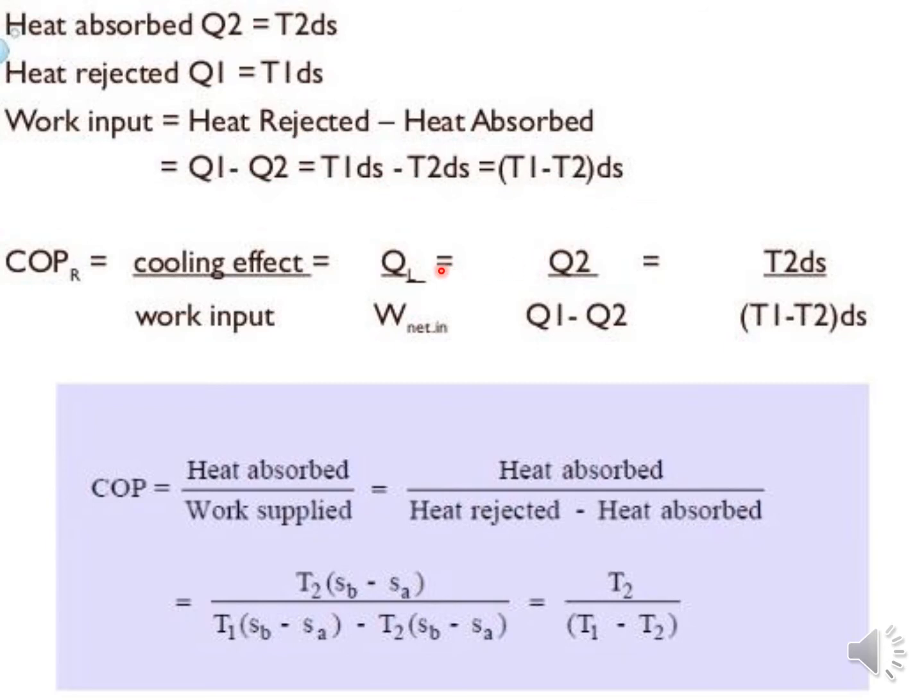Cooling effect is Q2, Q2 is heat absorbed, divided by Q1 minus Q2. Substitute the values of this formula and we will get the final expression as T2 divided by T1 minus T2. In efficiency calculation we were getting 1 minus T1 by T2, but here we get T2 divided by T1 minus T2, just opposite of that.